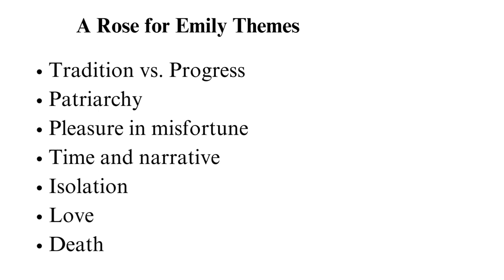Pleasure in misfortune refers to the act of people finding pleasure in the suffering of others, even in tragic circumstances. This theme is widespread in A Rose for Emily in various aspects — for example, the townspeople enjoy the deterioration of Emily's social status and isolation. Faulkner also plays with time and narrative, repeatedly switching between the present and past. He uses a nonlinear narrative structure to shape the reader's understanding of events and people. This strategy obscures and distorts the truth, as seen in the disappearance of Homer — readers do not straightforwardly sense that Homer has been in Emily's house the whole time.